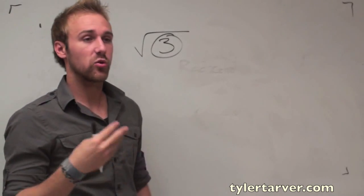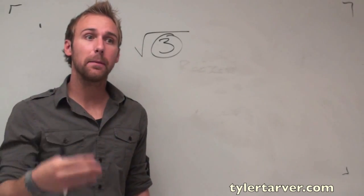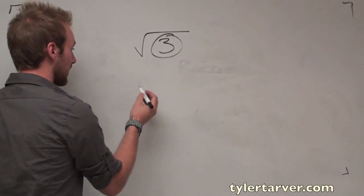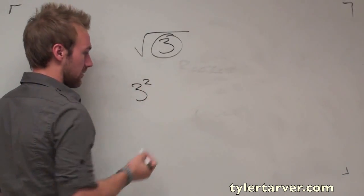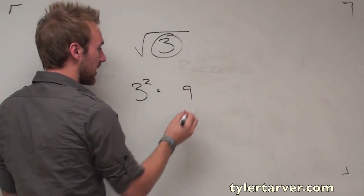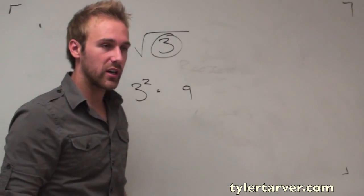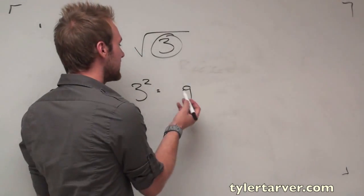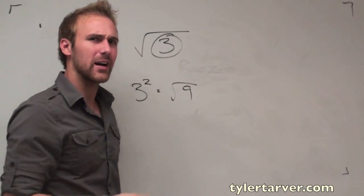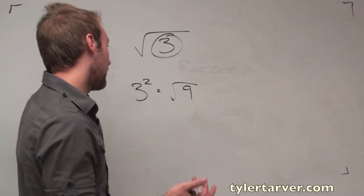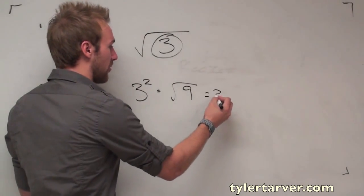Now, what a square root sign does is it does the opposite of squaring something. Say you had three squared. That would equal nine, correct? What a square root does, or what a radical does, it says, hey, what times itself equals this number? I don't know. In this case, it is three.